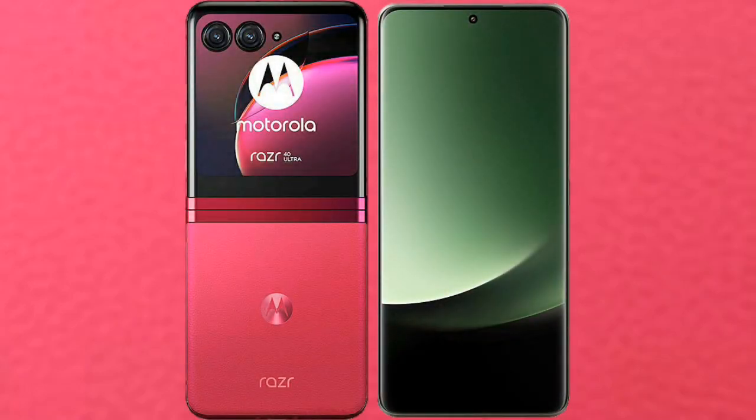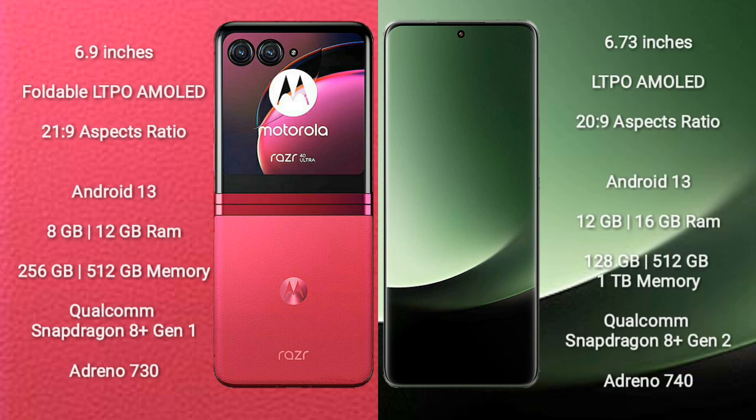I will compare the new Motorola RAZR 40 Ultra with Xiaomi 13 Ultra. The Motorola RAZR 40 Ultra comes with a 6.9-inch foldable LTPO AMOLED display with an aspect ratio of 21.9, while the Xiaomi 13 Ultra comes with a 6.73-inch LTPO AMOLED display with an aspect ratio of 20.9.